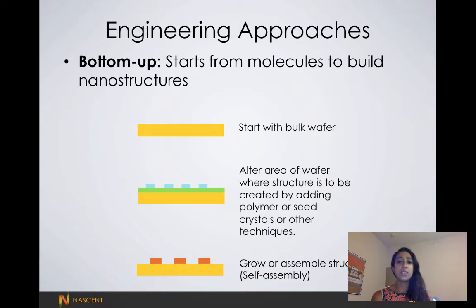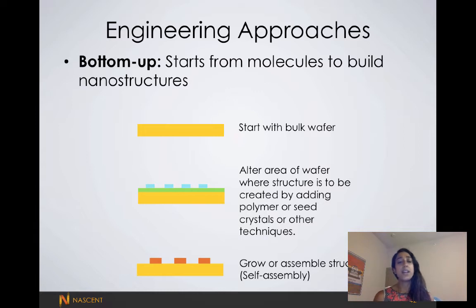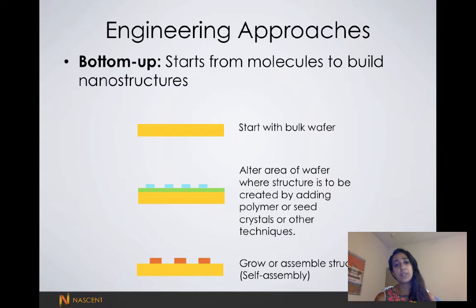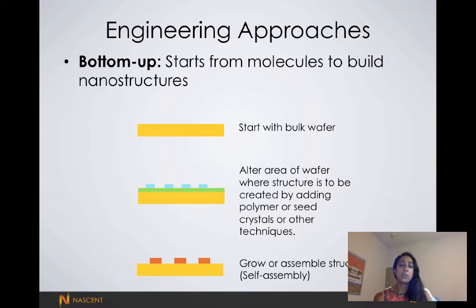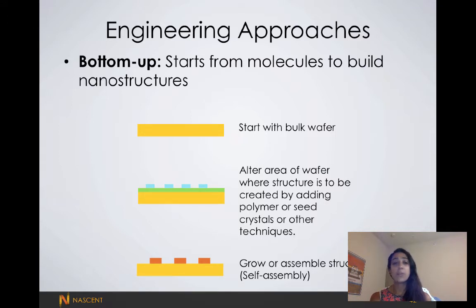I like to relate top-down or bottom-up approaches to building a house. In a top-down approach, building a house would be like starting with a big block of cement and then hacking away at it to get our doors and our windows. In a bottom-up approach we would build our house up brick by brick. There are a lot of advantages to the bottom-up approach — we have less wasted materials, and because we're building up our structure molecule by molecule, we can have much smaller feature sizes and especially tailored chemical functionalities.